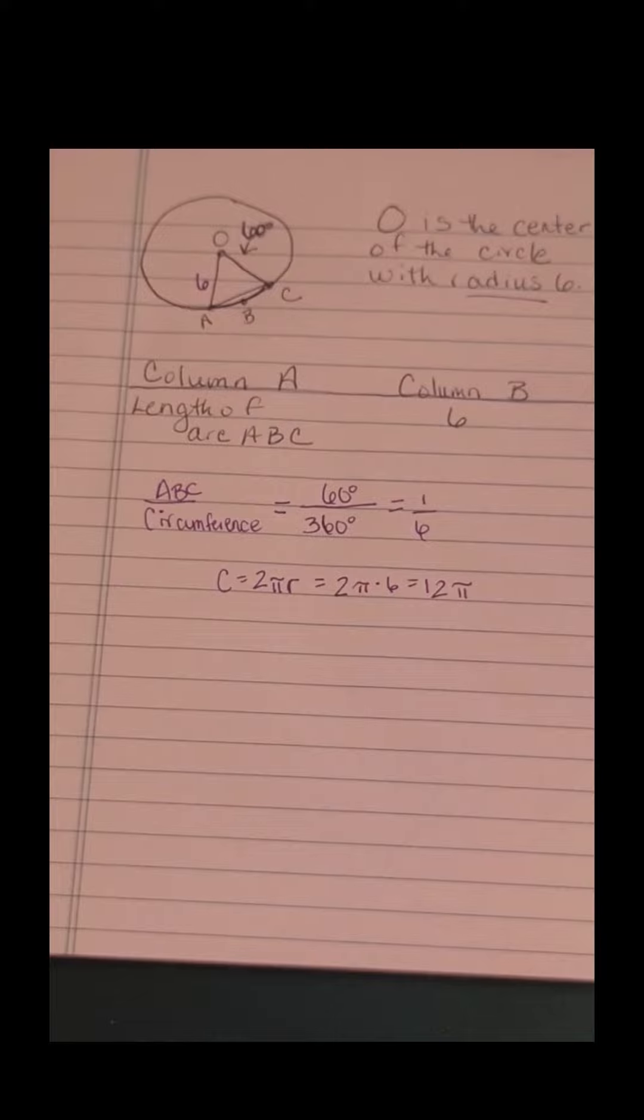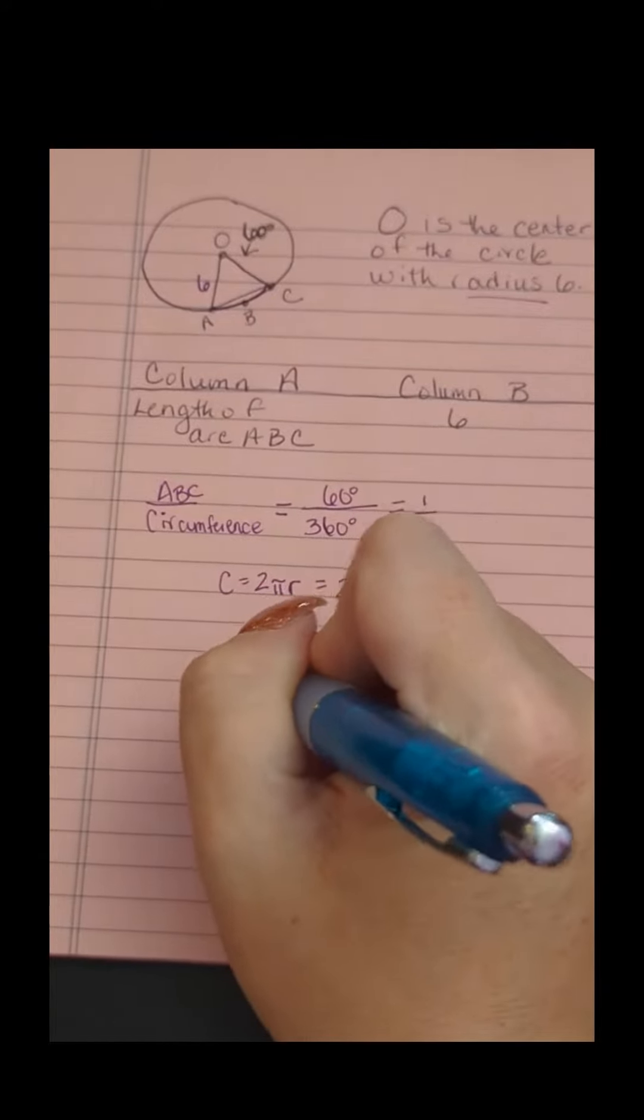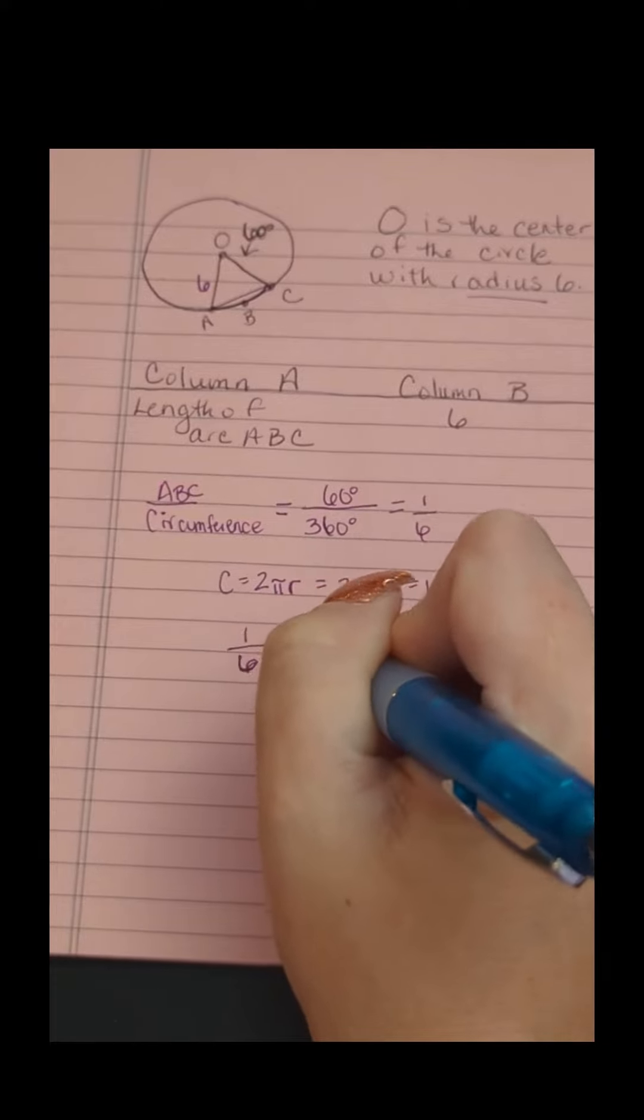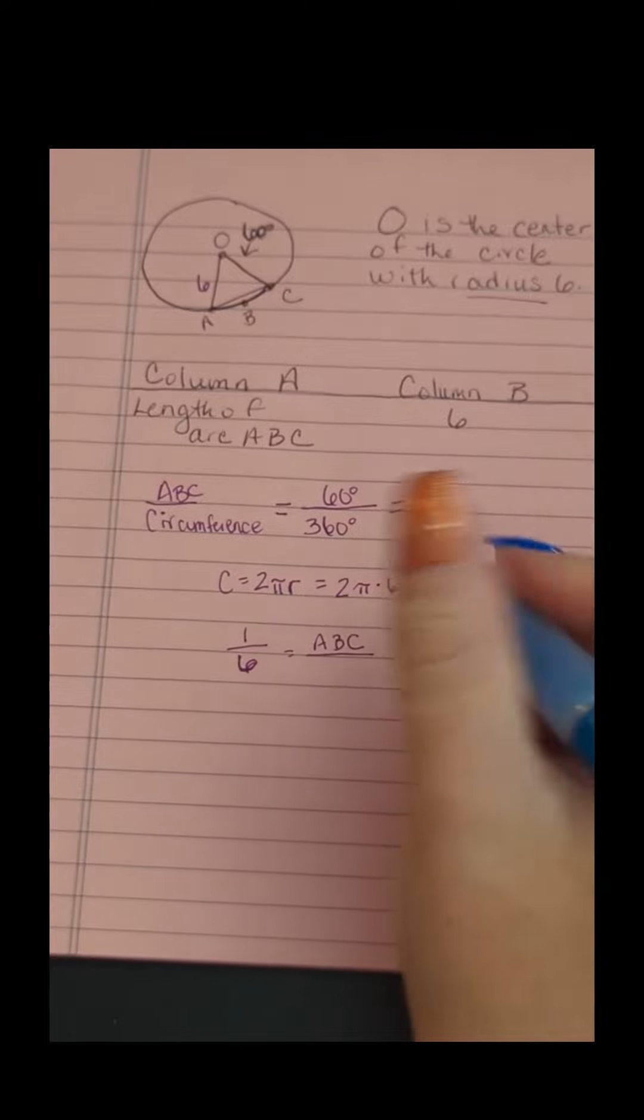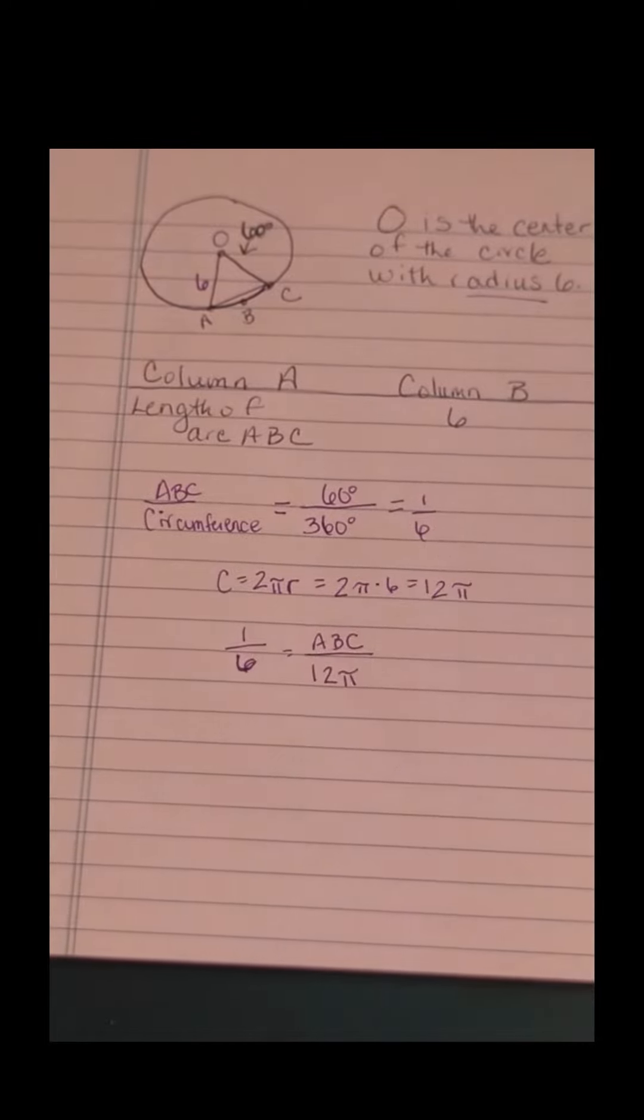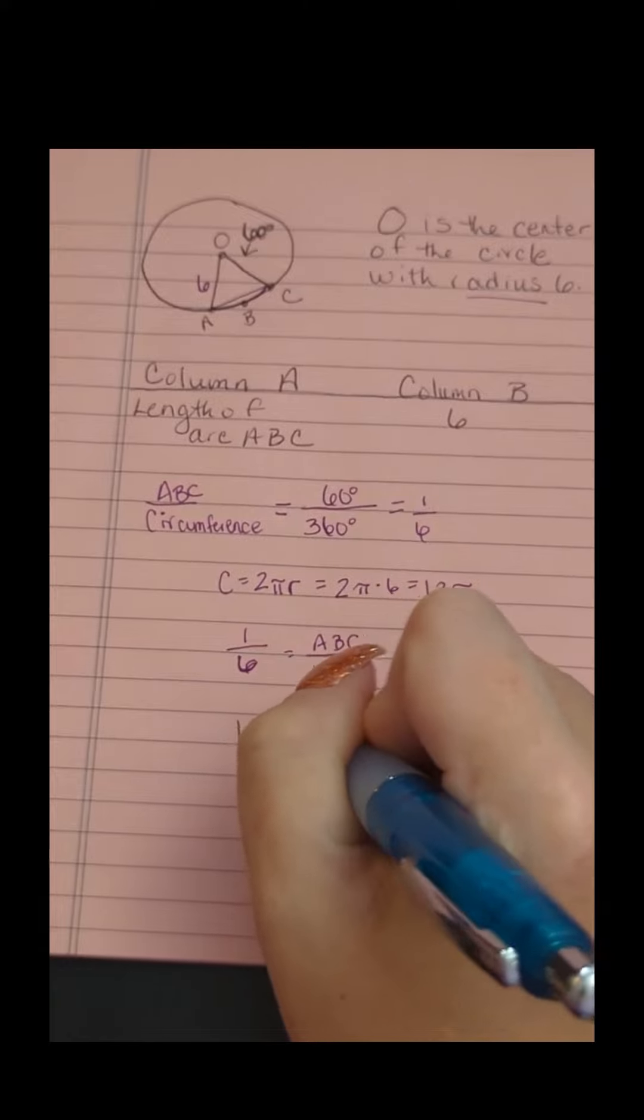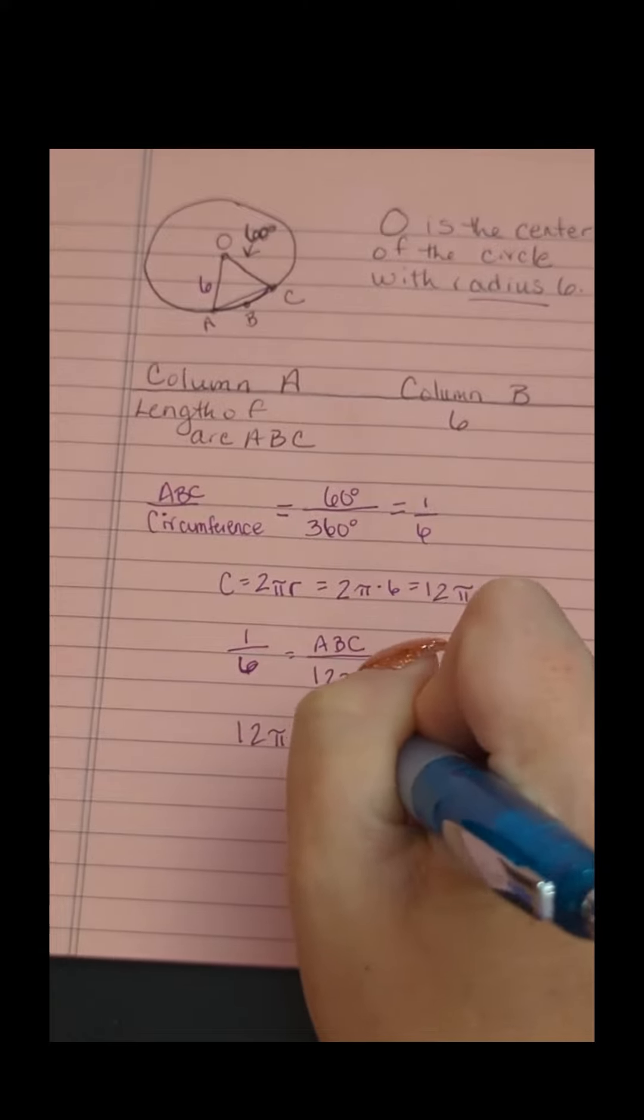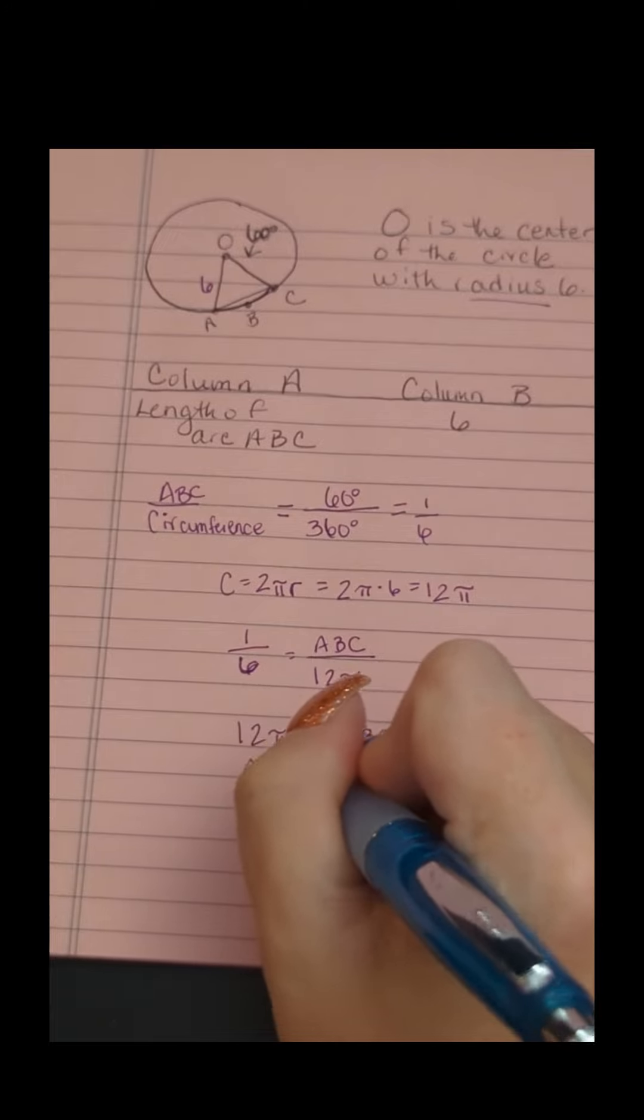Now we're ready to solve a simple proportion. This slice is 1/6 of the circle, so the arc length of ABC is 1/6 of 12π. That's our proportion - part to whole, part to whole. Quick cross multiplication: 12π equals 6 times that arc length, so our arc length equals 2π.